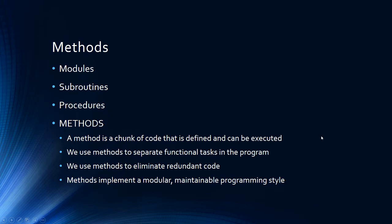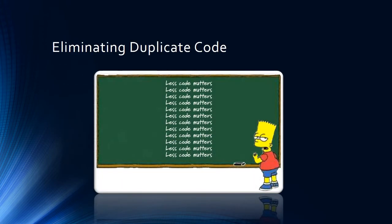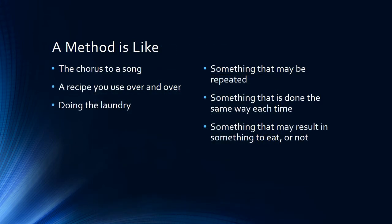We can have different people working on different methods. We always are trying to eliminate duplicate code, and as we get further along we'll see things where we tend to repeat ourselves quite a bit. We always want to remember: less code is best code. It is better if we could be more concise. A method is kind of like the chorus to a song — it repeats over and over. It could be a recipe that you use over and over; you go back to that certain spot, find that recipe, and reuse it.